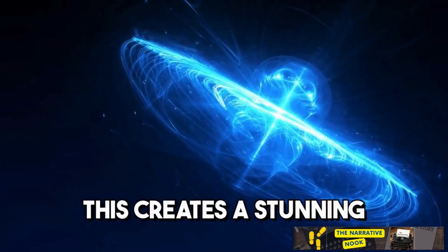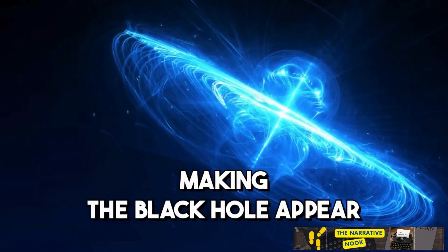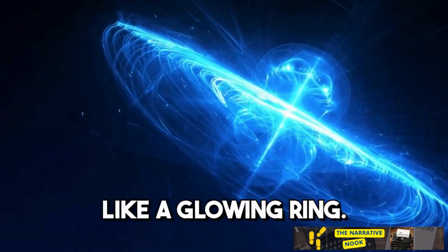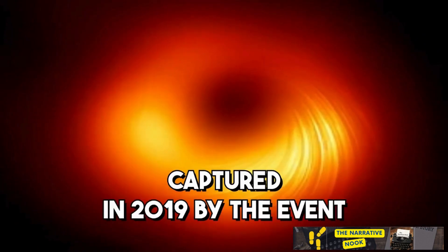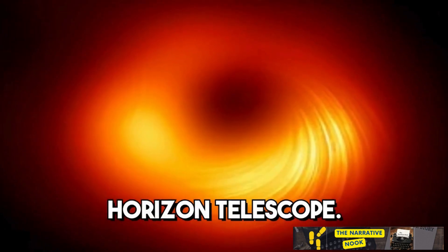From a distance, this creates a stunning halo effect, making the black hole appear like a glowing ring. This is how we got the first-ever photograph of a black hole, captured in 2019 by the Event Horizon Telescope.